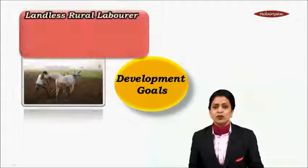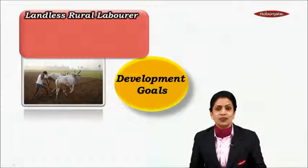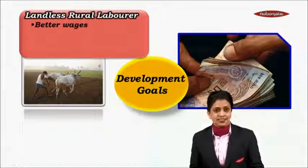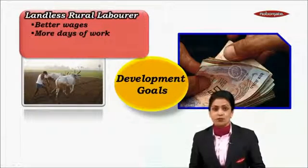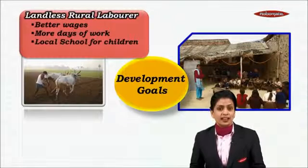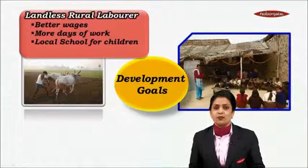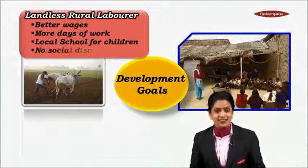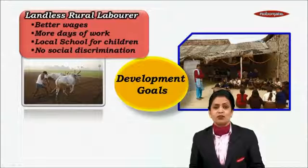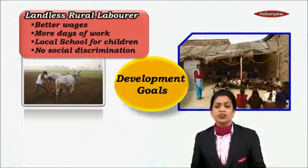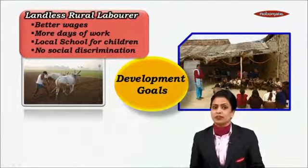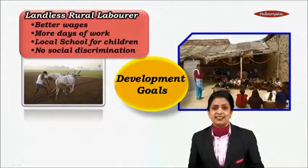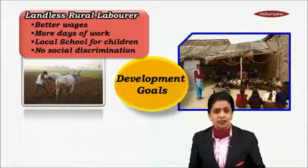The development goal of a landless rural labourer is: he wants better wages, more days of work, a local school for his children so that they become educated, and no social discrimination. So you see there are four development goals of this landless rural labourer.